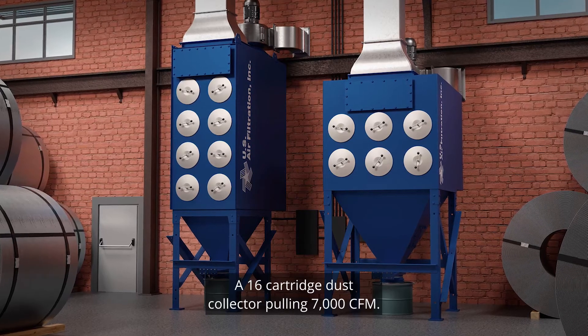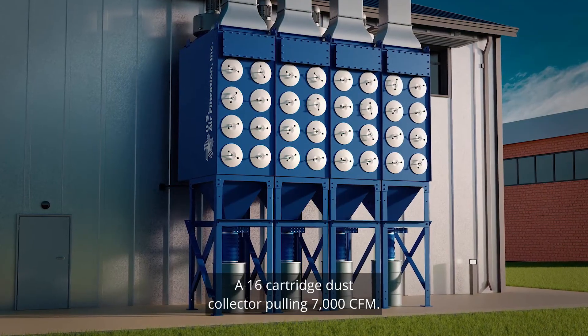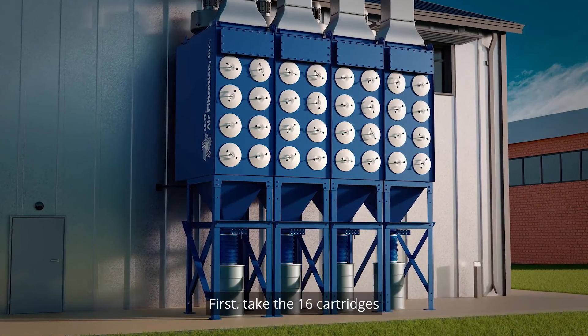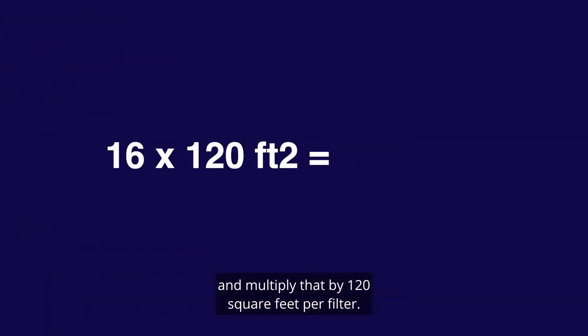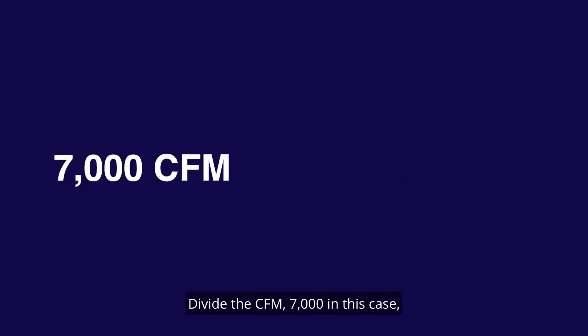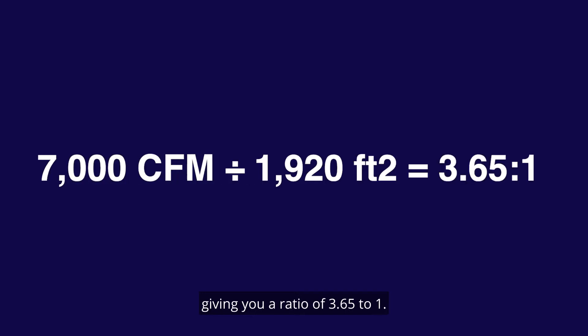Here's an example: a 16-cartridge dust collector pulling 7,000 CFM. First, take the 16 cartridges and multiply that by 120 square feet per filter, giving you 1,920 square feet. Then divide the CFM — 7,000 in this case — by the 1,920 square feet, giving you a ratio of 3.65 to 1.